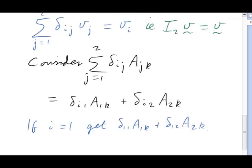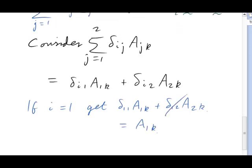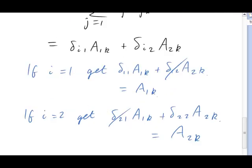It's very much like before. One of the deltas is 0 and the other is 1. We end up with A1k. What about when i is 2? This time we get A2k. Once again, whatever was the value of i is exactly the value that ends up on the row position for the matrix A. When i is 1, we get A1k. When i is 2, we get A2k.